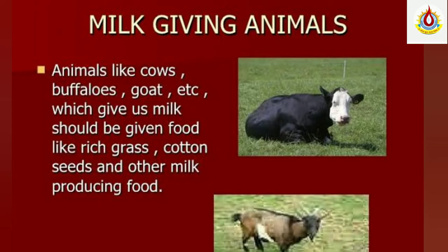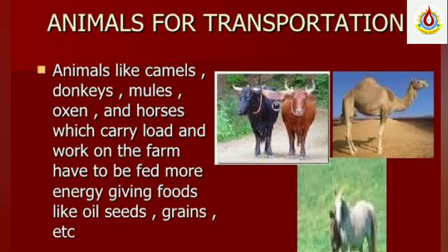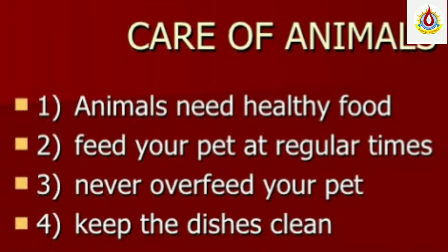Milk-giving animals like cow, buffalo, goat, etc. give us milk. They need producing food like grass and cotton seeds. Animals used for transportation like horse and oxen need energy-giving food like oil seeds, grains, etc., because they work for us. We need to take care of animals. Animals need healthy food. We should always feed our pets at regular times, keep their dishes clean, and take them to the doctor when needed.